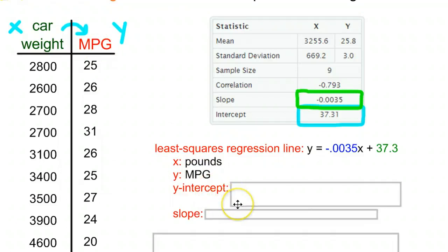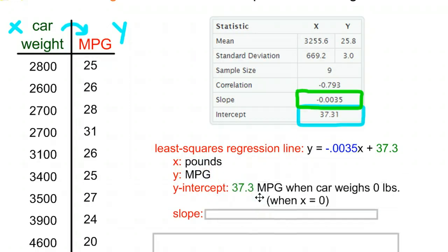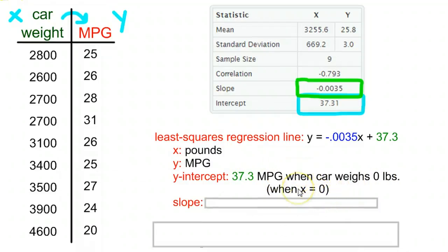The Y intercept is an interesting thing. It's when we have 0 of X, it's how much of Y we have. So in the context of this problem, when we have a 0 pound car, we can expect to get this many of Y, 37.3 miles per gallon. So 37.3 MPG when the car weighs 0 pounds, when X is equal to 0. Kind of a weird thing to think about. Almost always the Y intercept is irrelevant in terms of trying to actually make sense of what it would mean in an example, because it's so far away from the rest of the data that it's a huge outlier. So we tend to not talk about it a whole lot.